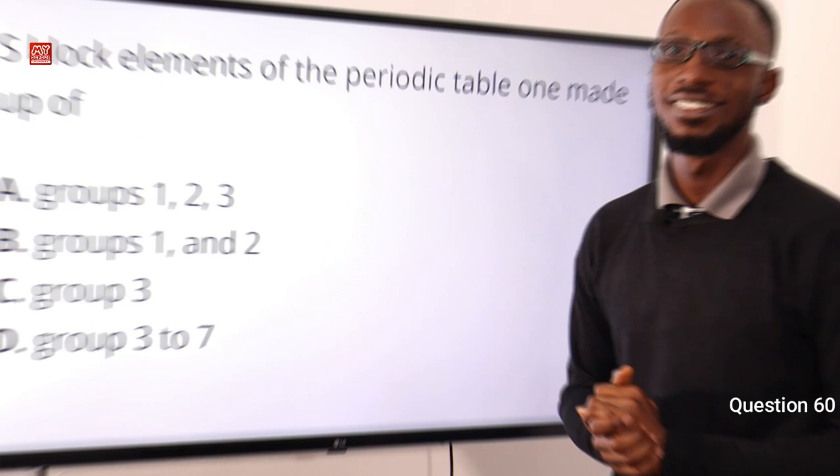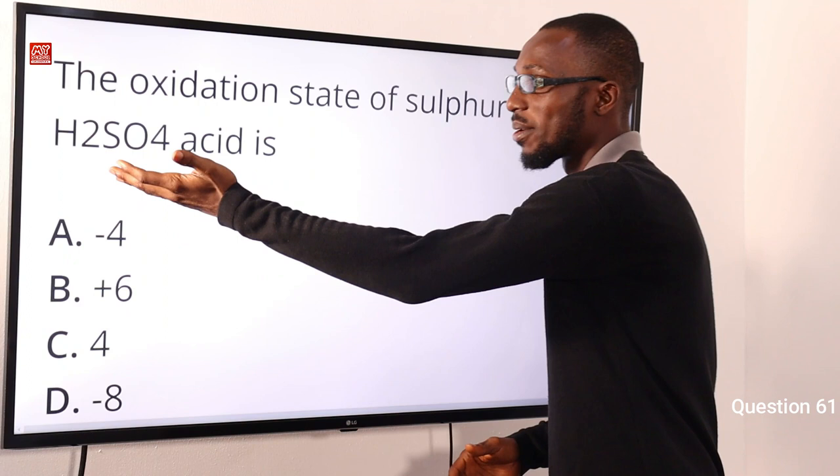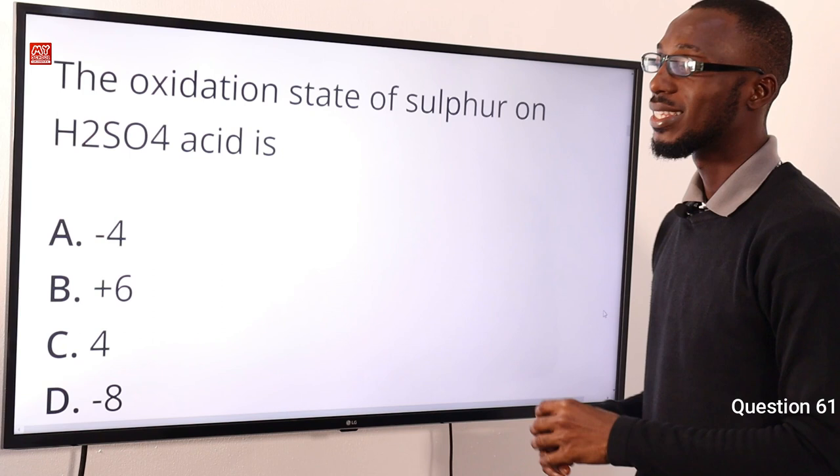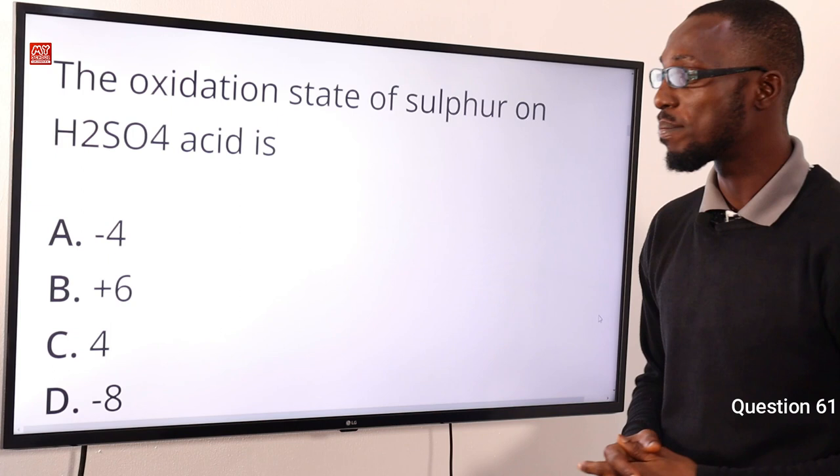Number 61: The oxidation state of sulfur in H₂SO₄ is what? The IUPAC name is tetraoxosulfate(VI). The 'VI' tells us that the oxidation state of sulfur is +6. The correct option here is option B for +6.